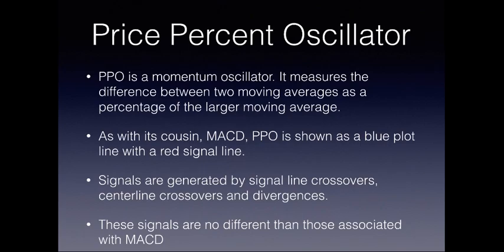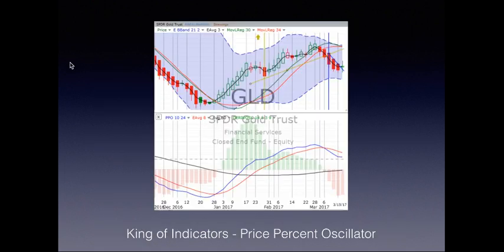The Price Percent Oscillator is a momentum oscillator. It measures the difference between two moving averages, just like the MACD does. In fact, the PPO is just like the MACD. We use the same blue plot line and a red signal line, and we see signals generated when we have signal line crossovers.